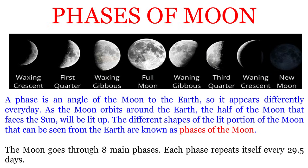The Moon goes through eight main phases. Each phase repeats itself every 29.5 days.